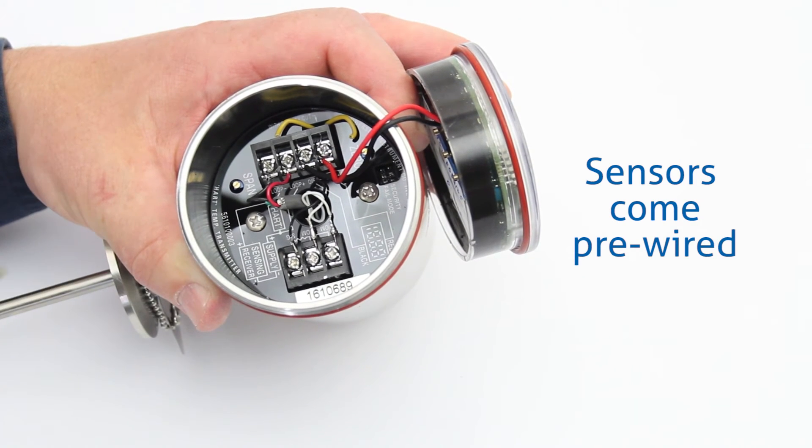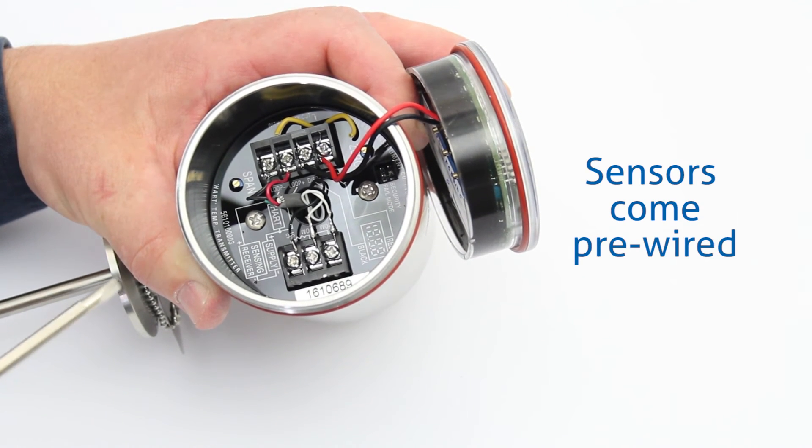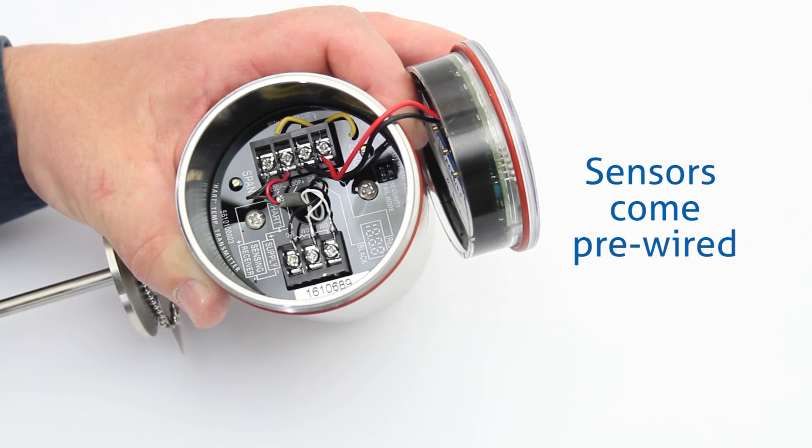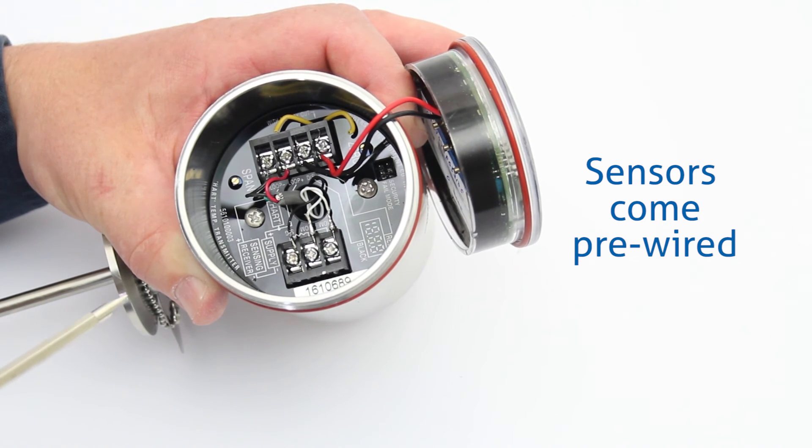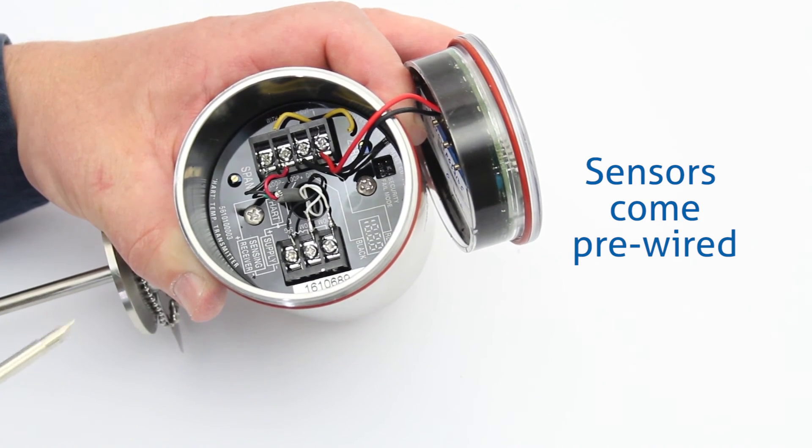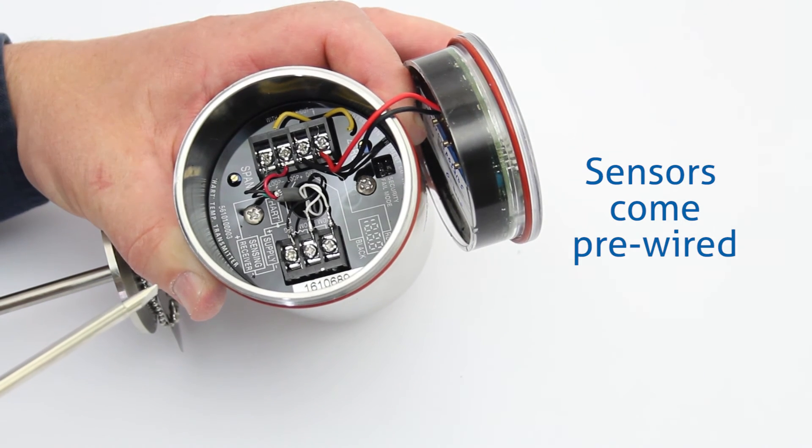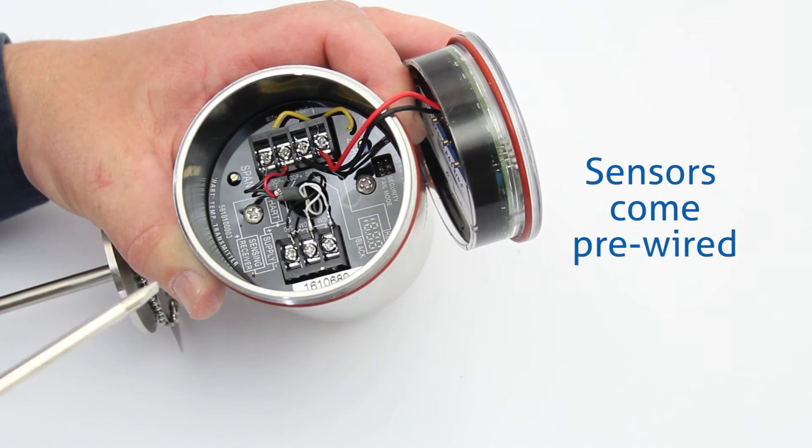I just wanted to mention when you order the sensors, they come pre-wired with all of the wires connected inside of here. So you really wouldn't have to go inside of this unless you were replacing a component or unless you purchased a sensor that did not come with wire and you installed your own wire.